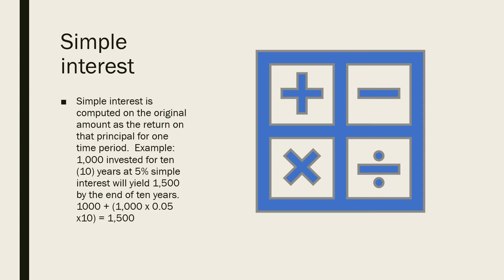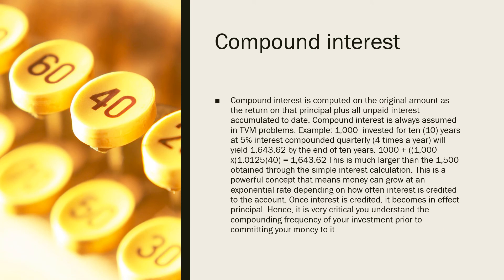Simple interest is computed on the original principal amount for one time period. For example, a $1,000 investment for 10 years at 5% simple interest will yield $1,500 by the end of 10 years. When you say compound interest, it is computed on the original principal plus all unpaid interest accumulated to date. Compound interest is always assumed in TVM problems. For example, a $1,000 investment for 10 years at 5% interest compounded quarterly — 4 times a year — will yield $1,643.62 by the end of 10 years.